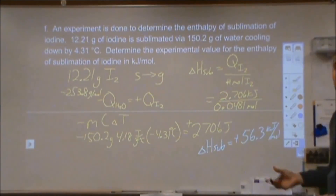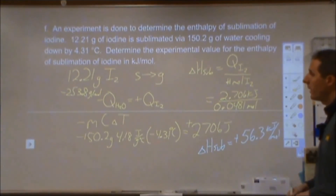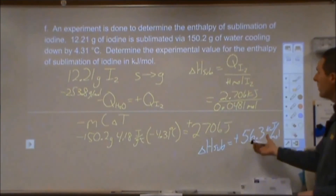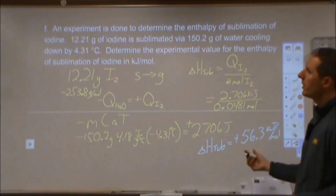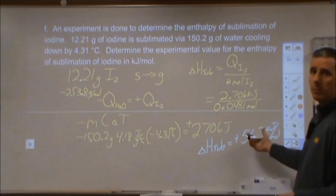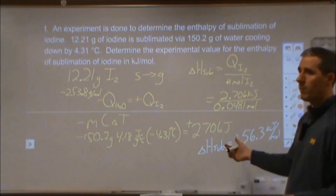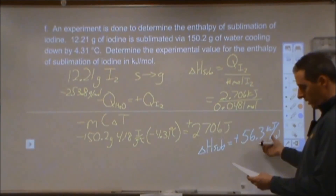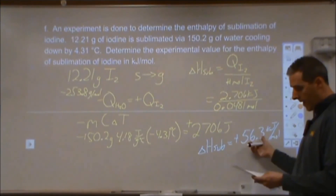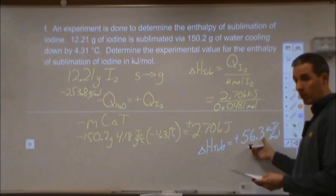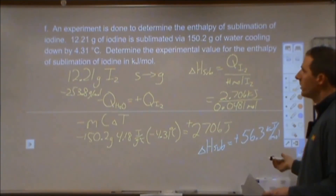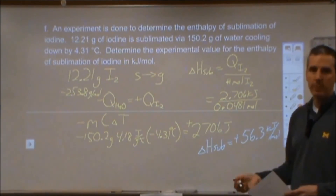If that value is off from the accepted value, that's because it's an experimental result and error was present. We can apply this back to our earlier result: the negative 374 kJ/mol from Part C, plus this sublimation enthalpy, means we'd end up with a total enthalpy change of about negative 430 kJ/mol when going to the solid state instead of the gaseous state.